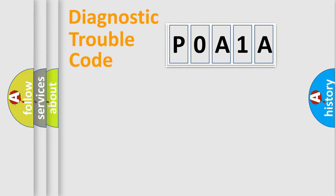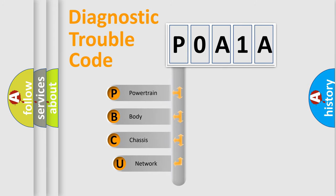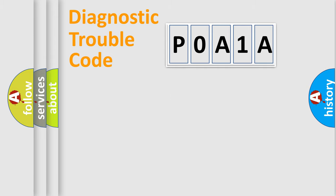Let's do this. First, let's look at the history of diagnostic fault code composition according to the OBD2 protocol, which is unified for all automakers since 2000. We divide the electric system of an automobile into four basic units: Powertrain, Body, Chassis, and Network.